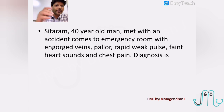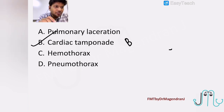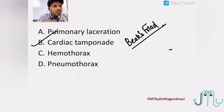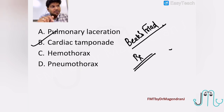A 40-year-old man met with an accident and comes to the ER with engorged veins, pallor, rapid weak pulse, faint heart sounds, and chest pain. The diagnosis is pretty straightforward — cardiac tamponade — because the features are suggestive of Beck's triad: a combination of hypotension, muffled heart sounds, and raised JVP. We can also see Kussmaul's sign and pulsus paradoxus. Treatment for this condition is drainage of the blood, which is pericardiocentesis. This is very commonly seen with blunt trauma chest in road traffic accidents.